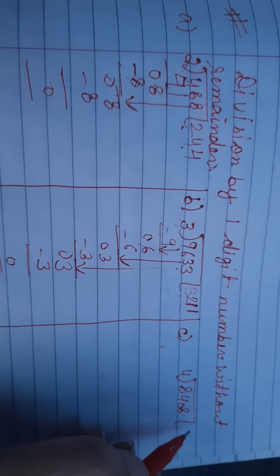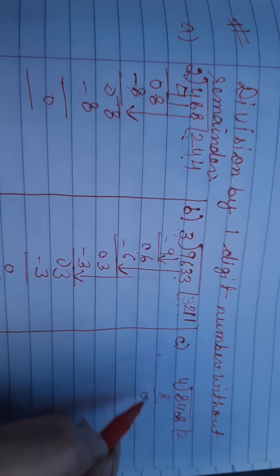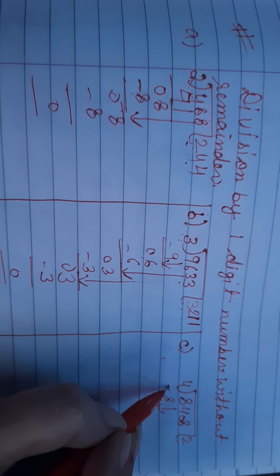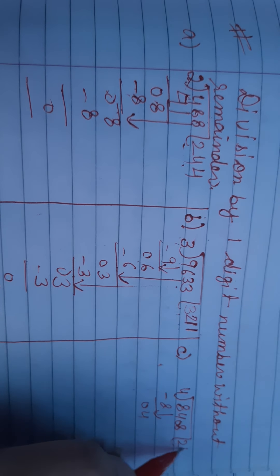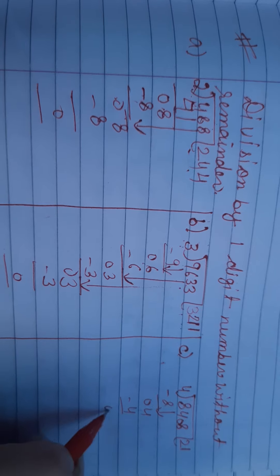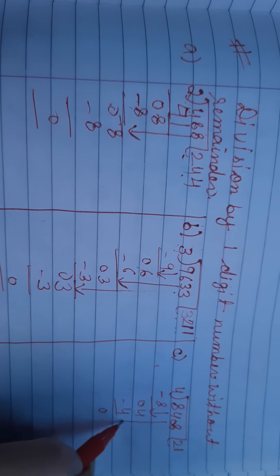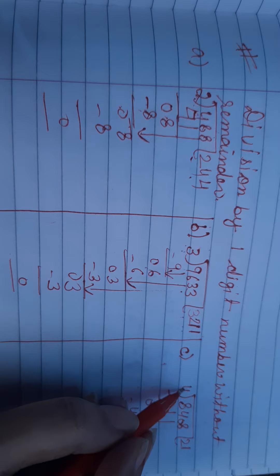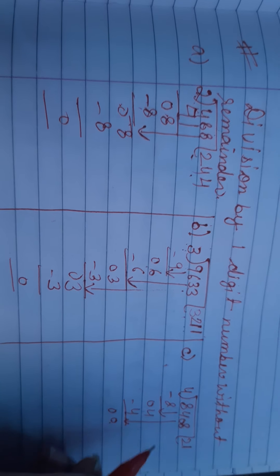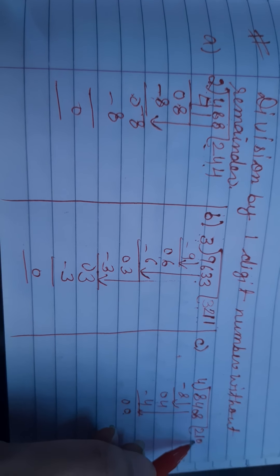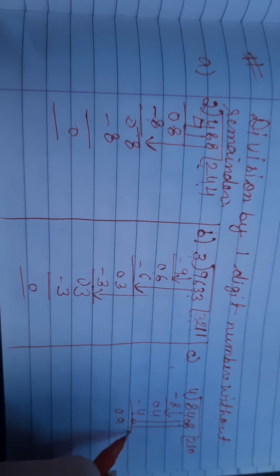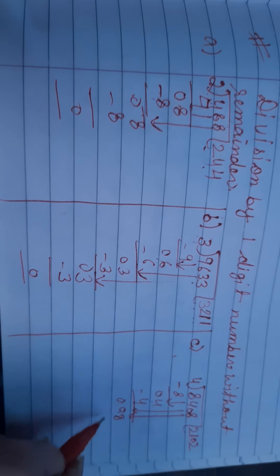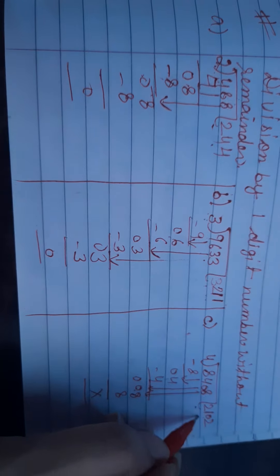Now I have to solve this question. We will read the table of 4. 4 twos are 8, then 0. Then we will bring down the 4 here. 4 ones are 4, minus 0. Then we will bring down the 0 here. 0 is smaller than 4, so we write 0 there. Then we will bring down the 8 here. 4 twos are 8. So our answer will be 2102.